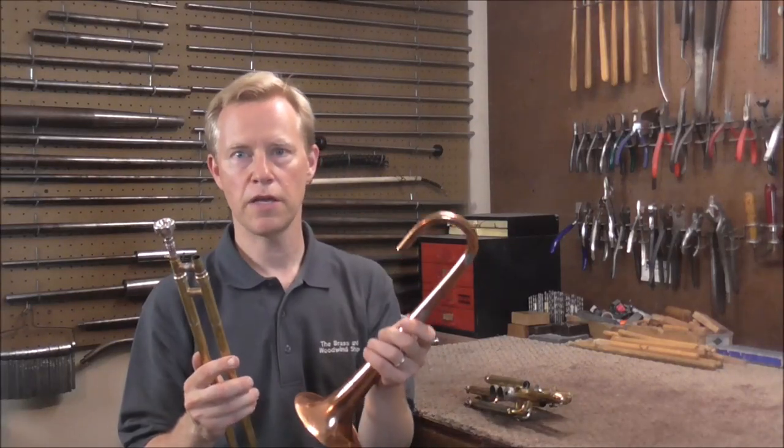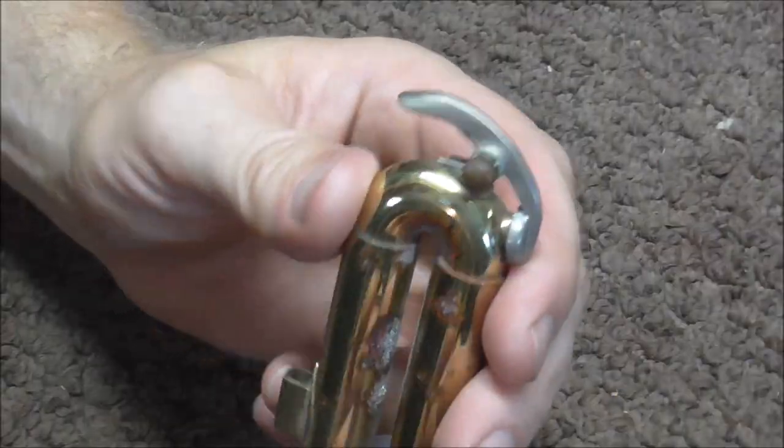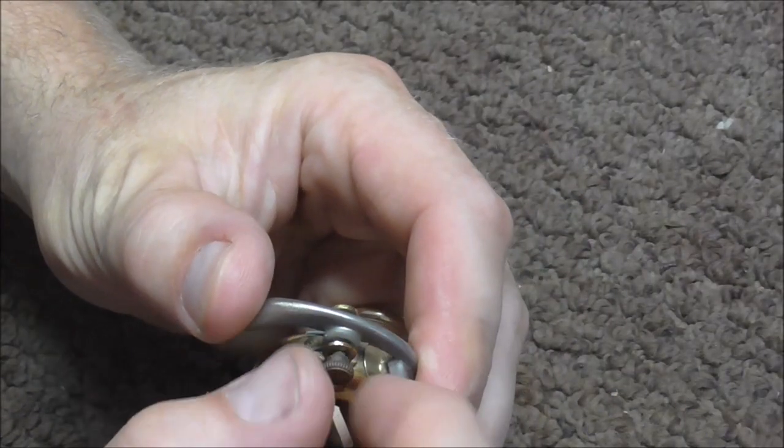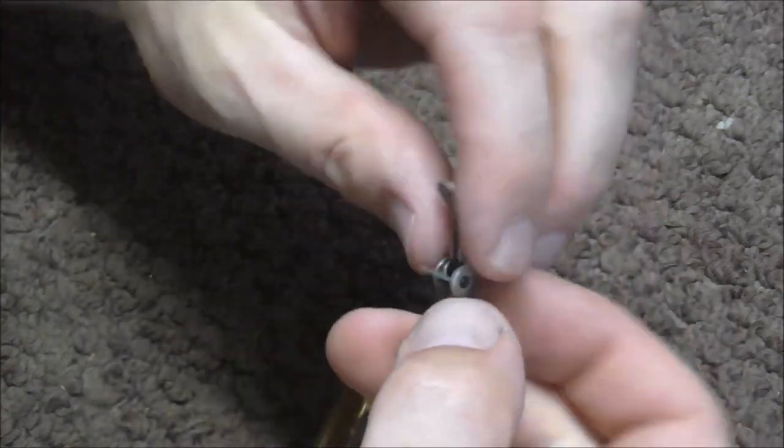Right now I'm going to get that water key installed, and I'm going to take it off of this old cornet. First I have to get the water key off, and this is really easy to do. You pull out the hinge rod, and then this comes right off.